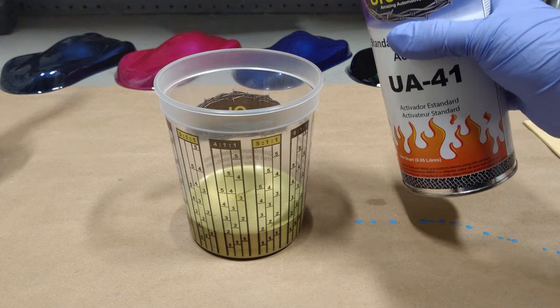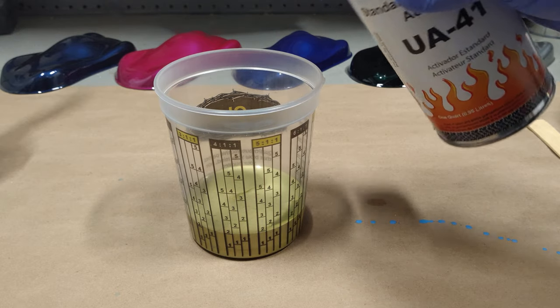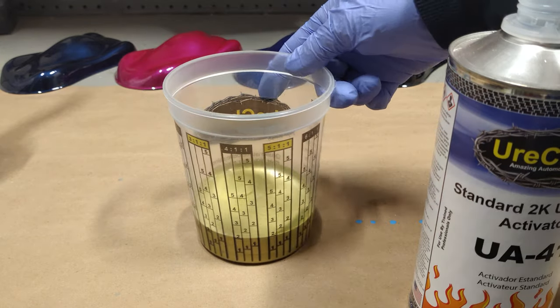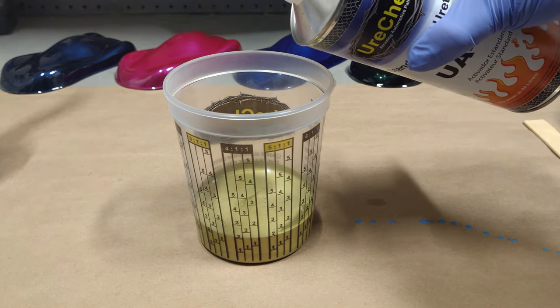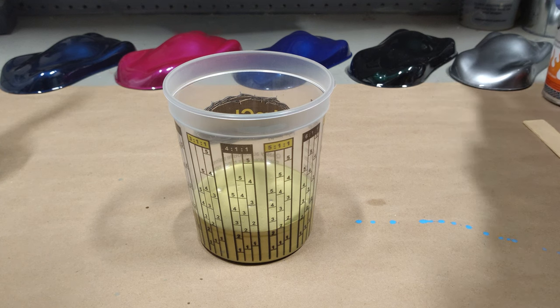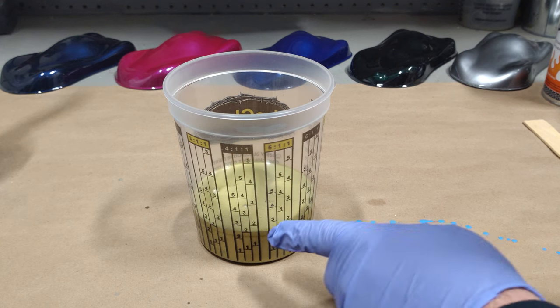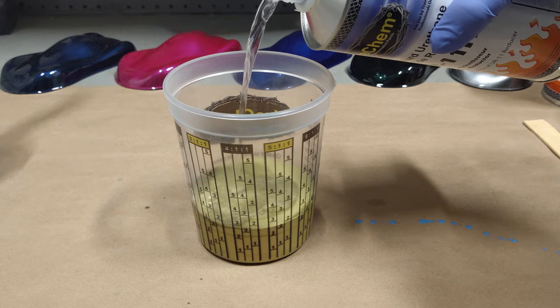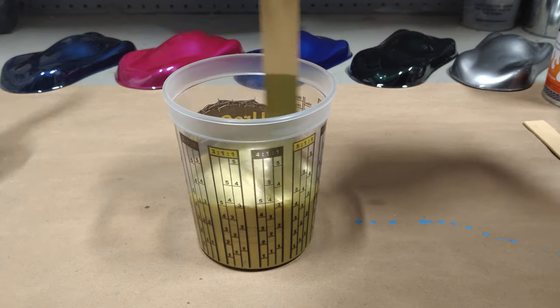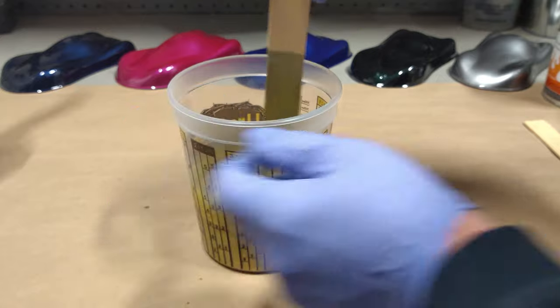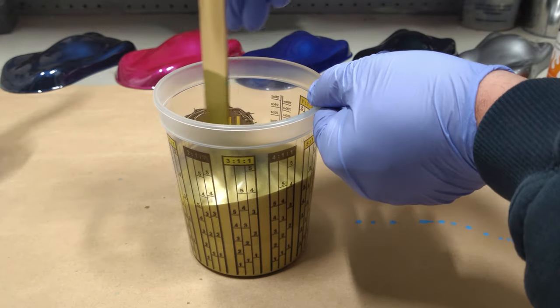So we've just got our Eurochem activator. So we're going to go up to the next number two, right here immediately to the right, staying in the same column. Again, we're going to move to the right one more time to our reducer. Always be sure to really scrape the bottom and the sides to really be sure you're getting everything incorporated really well.